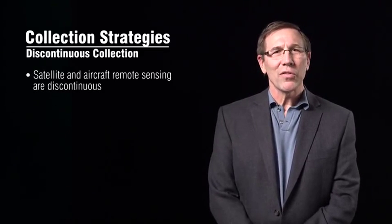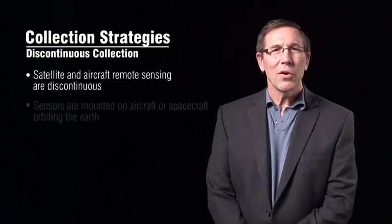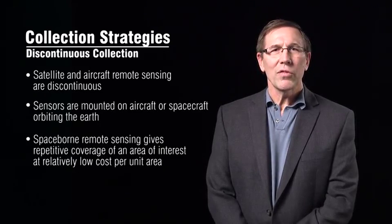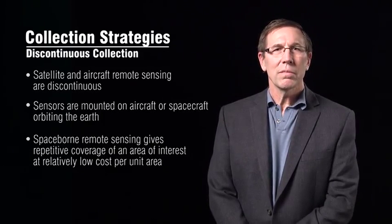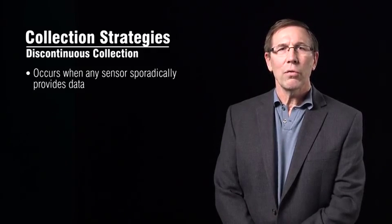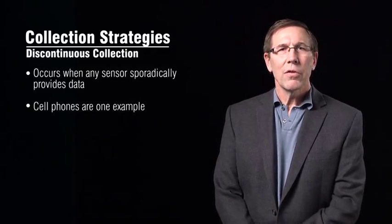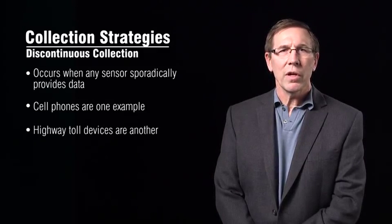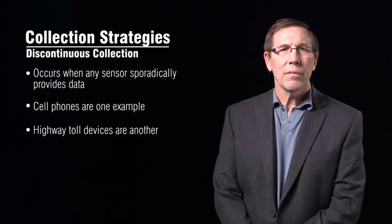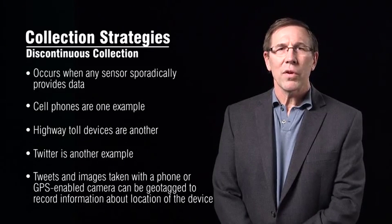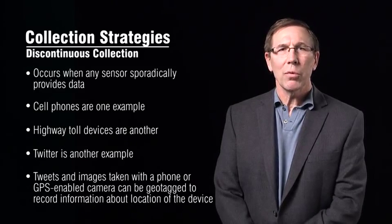Satellite remote sensing systems are an example of a discontinuous source strategy. Sensors are mounted on aircraft or satellites orbiting the earth, providing repetitive coverage of an area of interest. Discontinuous collection occurs when any sensor sporadically provides data. Consider your cell phone as a sensor — a cell phone can be a discontinuous sensor. There are numerous other examples: highway toll devices that record your point of entry and exit from a toll road, Twitter — tweets can be geo-tagged to record the location of the device that created the tweet, and images taken with a phone or GPS-enabled camera also record location.